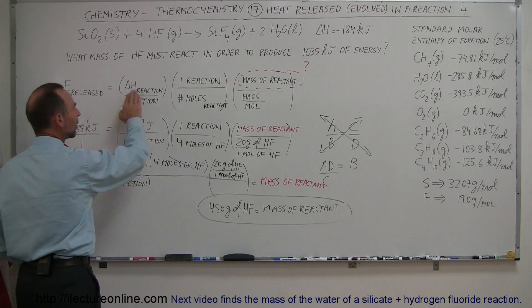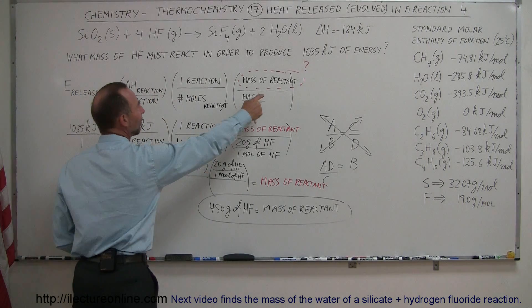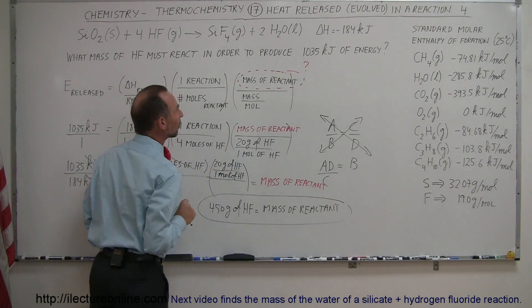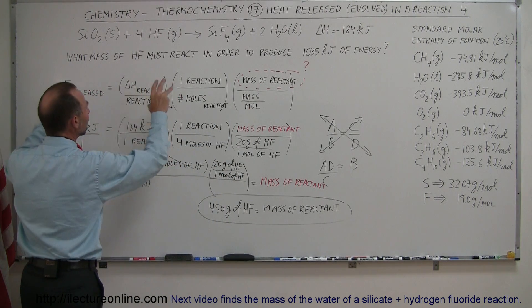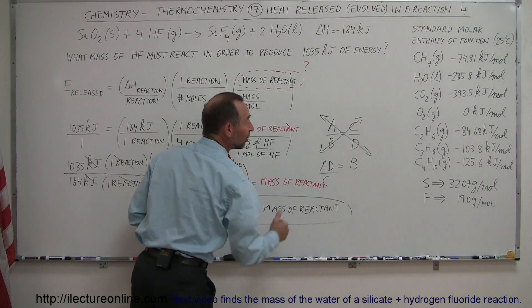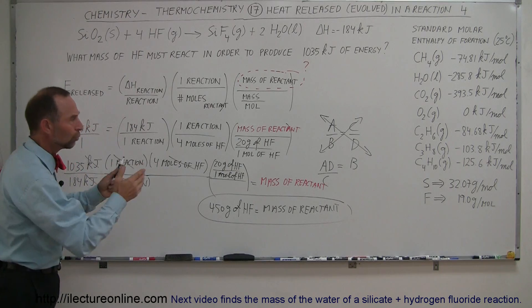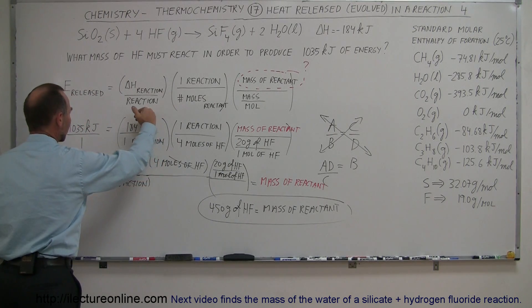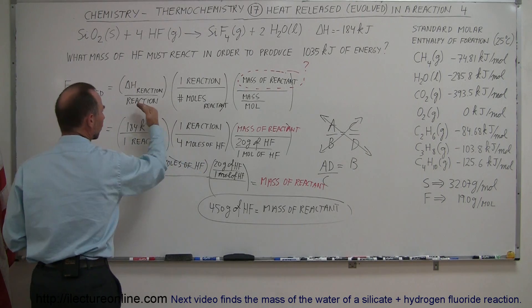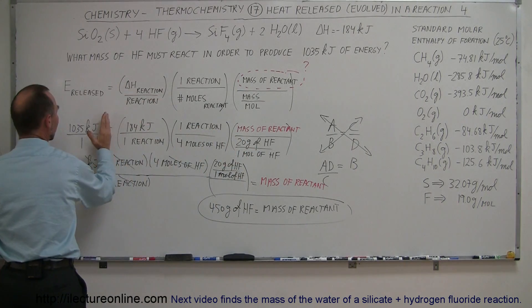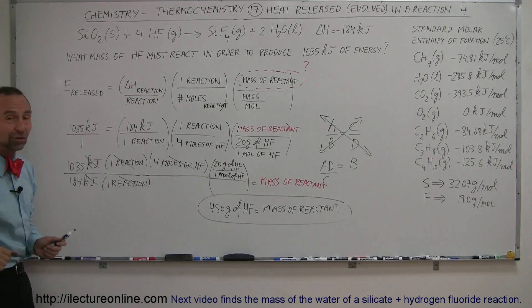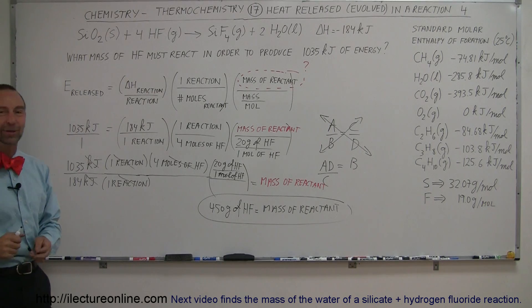We used the very same equation as before. We identified the unknown — in this case the mass of the reactant rather than the energy released — plugged in all other given values, and used the algebra technique of moving things across the diagonal when two fractions are set equal to each other. Move the kilojoules down, the reaction terms around, 4 moles and 20 grams up to the left side, and use your calculator to find the answer.